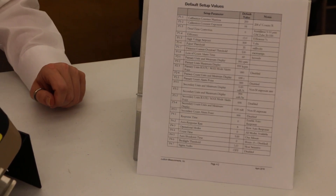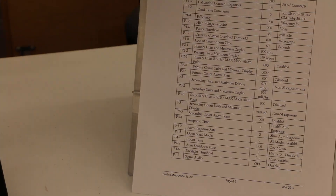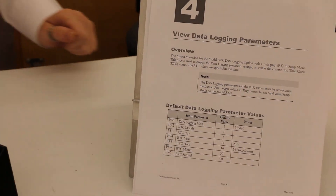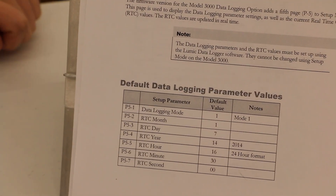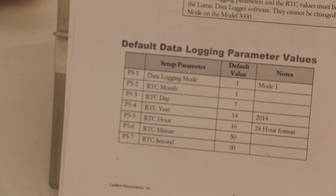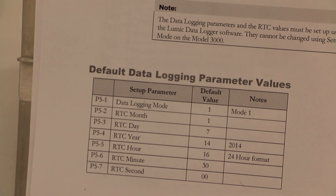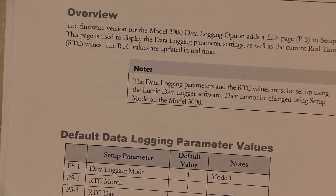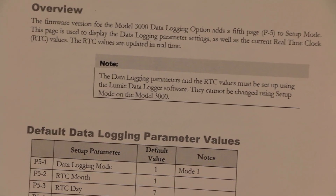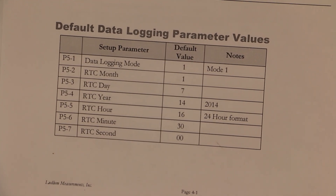If you have a data logging instrument, that will be a 5th section. None of the parameters in the 5th page are changeable through the device menu — you must have the calibration software in order to adjust any of these parameters. Also, you can enable protect mode, which will prevent any modifications to any parameters through the device menu.